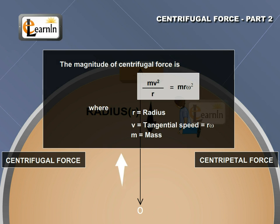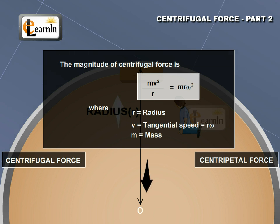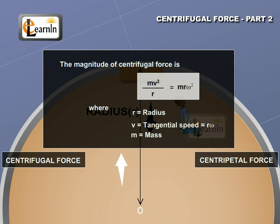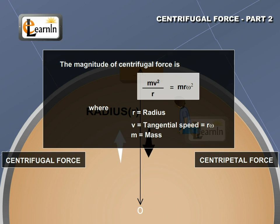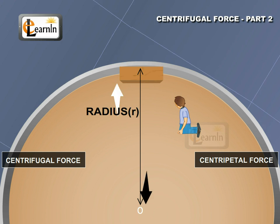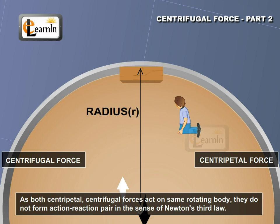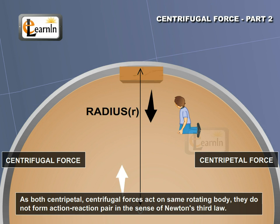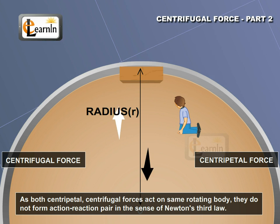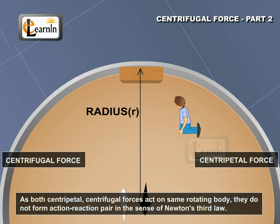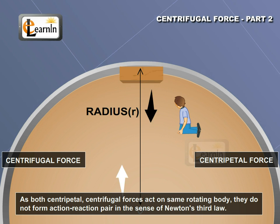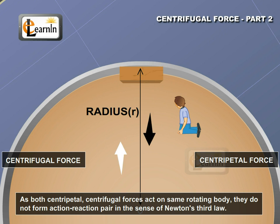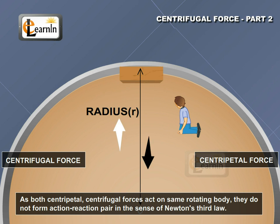So, the magnitude of centrifugal force is equal to mv squared by r, which is equal to mrω squared. Note that both centripetal force and centrifugal force act on the same rotating body. Therefore, they do not form an action-reaction pair in the sense of Newton's third law.